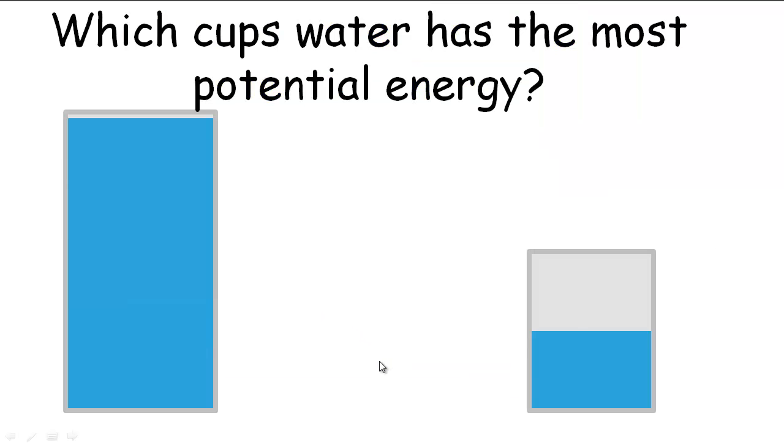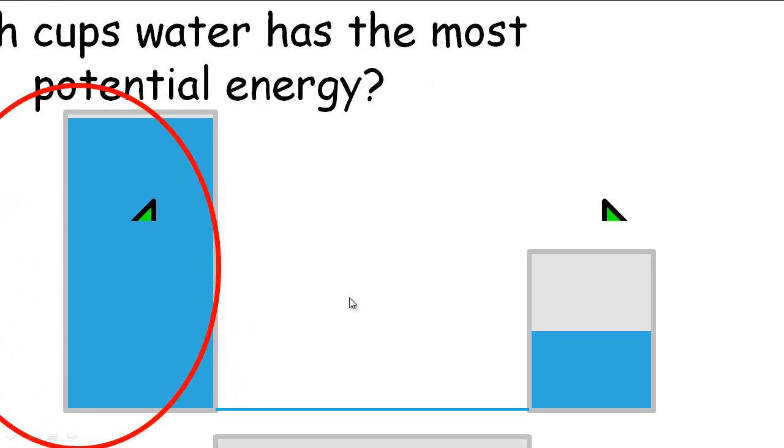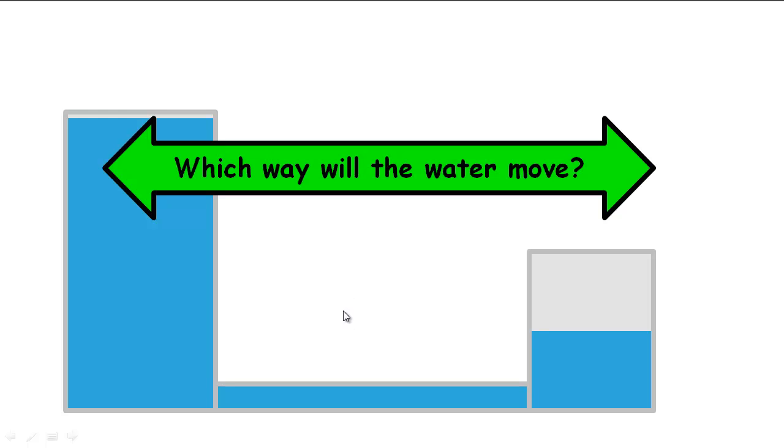All right, so which cup has the most potential energy now? Obviously this cup has the most potential energy. Okay, and if I was to connect them by a pipe again, which way would the water move? In this example, the water's going to move this way.